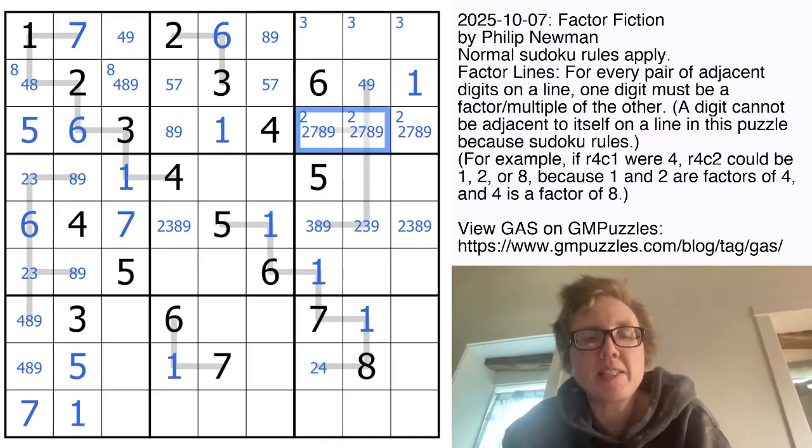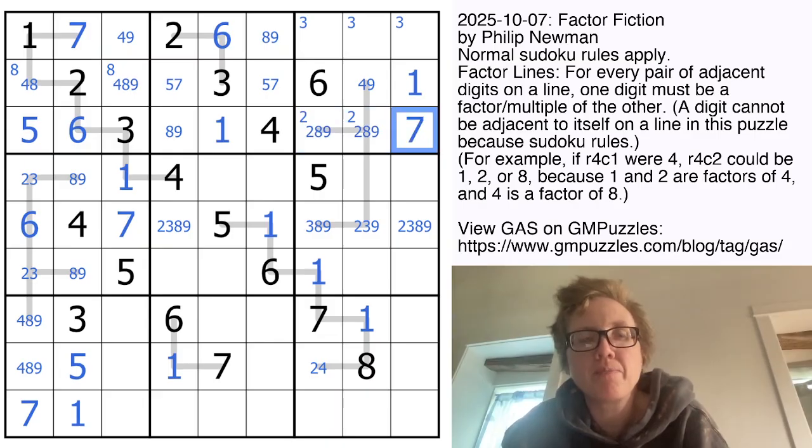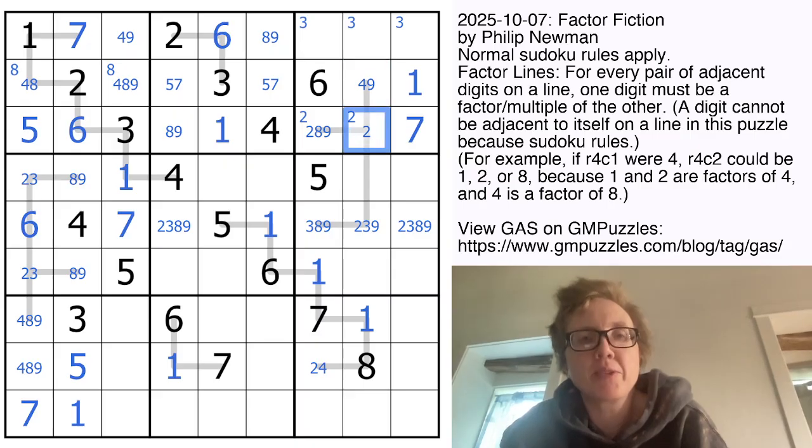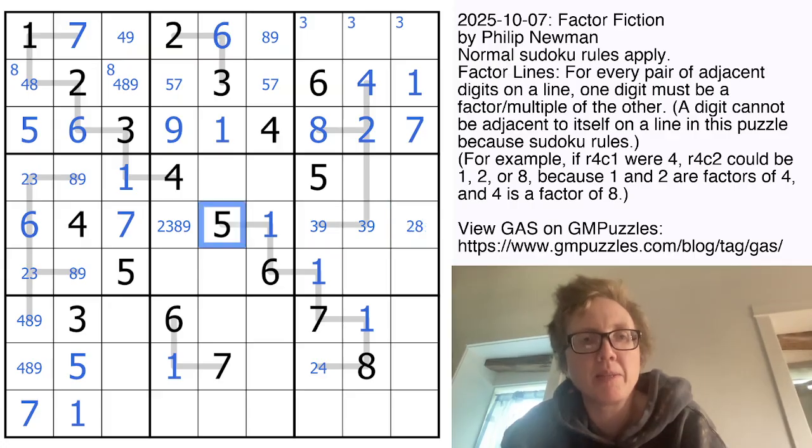Now these are from 2, 7, 8, 9. 7 can't be in any of these, because it can only go next to a 1. So that's our 7. 9 can't go here, because 9 can't go next to 4. An 8 also can't go there. So that's going to be a 2, making that a 4, and making that an 8. Now that eliminates the 2, 8 possibility here. This is now a 3, 9 pair. So we can eliminate 3 and 9 from here, making that 8, and making this 2.